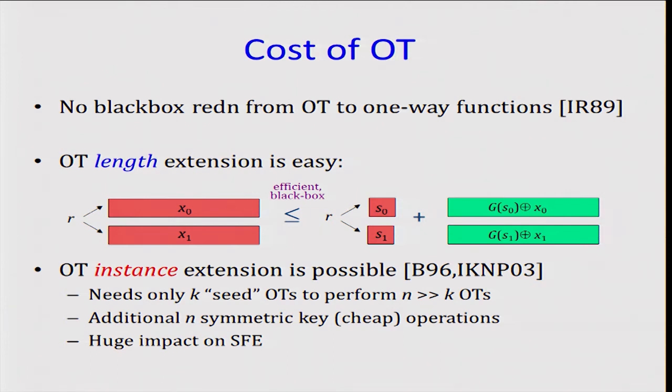The more non-trivial problem, which is OT instance extension, or just called OT extension, which we know is fortunately possible, we only need K public key operations, like key seed OTs, and additional N symmetric key operations. This allows us to perform an arbitrary polynomial number of OT operations just using these K public key operations.